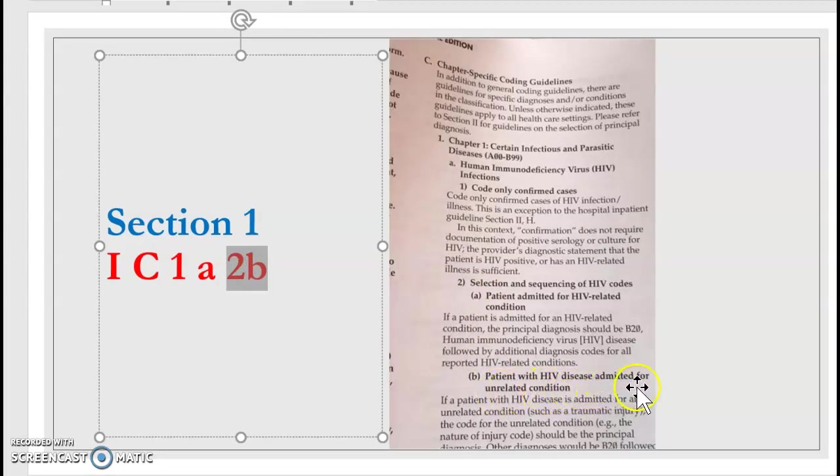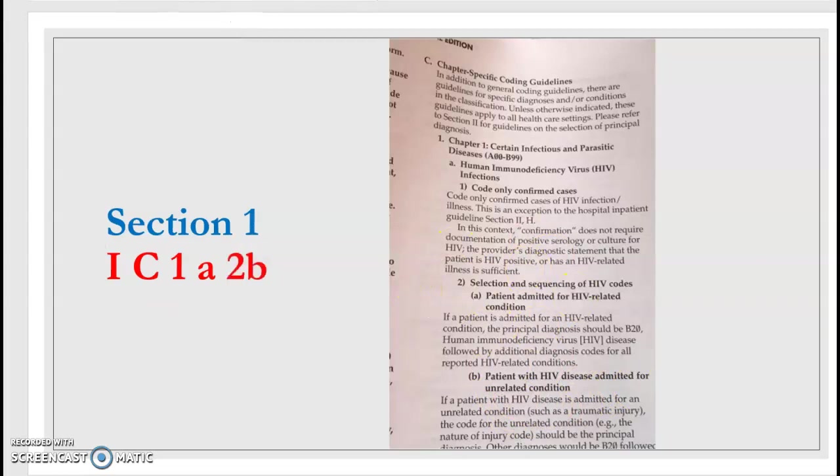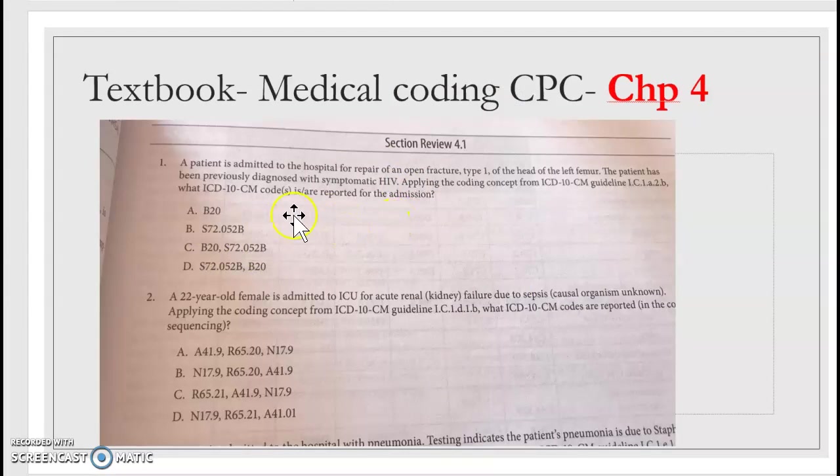Patient with HIV disease admitted for unrelated condition. That is the coding guideline you are following because that's the question that has been given to you. Patient previously been diagnosed with symptomatic HIV, so review that as much as possible and find the correct sequence of the questions or the choices given to you and then mark it down here before you do your homework.